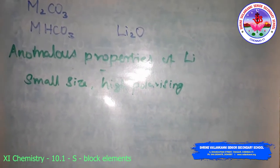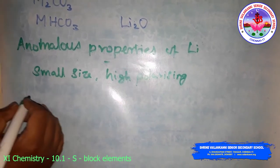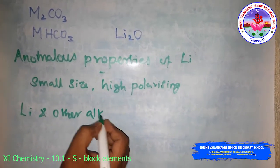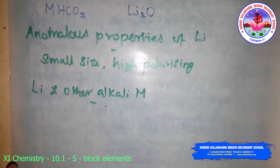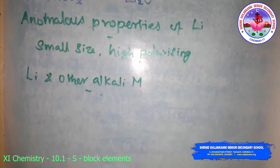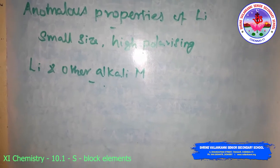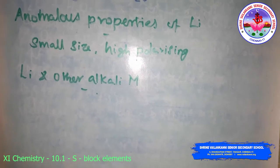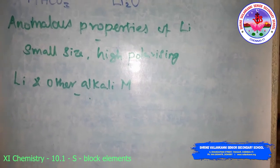We will see the points of difference between lithium and the other alkali metals. First, lithium is much harder and its melting and boiling points are higher than the other alkali metals. Lithium is the least reactive but the strongest reducing agent among all the alkali metals. Lithium is deliquescent and crystallizes as a hydrate, whereas other alkali metal chlorides do not form hydrates.